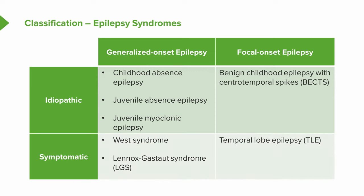We'll also review some important symptomatic epilepsies. West syndrome and Lennox-Gastaut syndrome are two of the most important symptomatic or secondary generalized epilepsy syndromes — they have a cause, some underlying neurologic insult that drove the onset of seizures and other neurologic dysfunction. The symptomatic focal onset epilepsy we'll review is temporal lobe epilepsy, one of the more common epilepsies seen in adults and important to understand from a treatment standpoint.